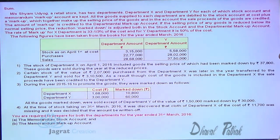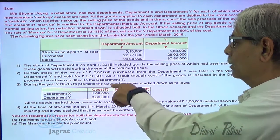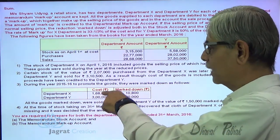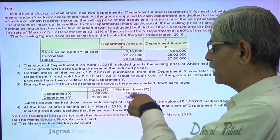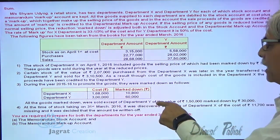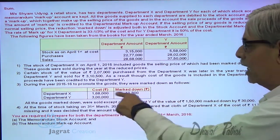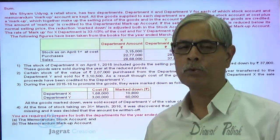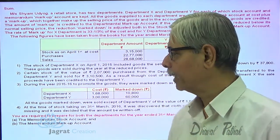During the year 2015–16, to promote goods, there were markdowns as follows: Department X — cost 1,68,000, markdown 10,800; Department Y — cost 3,10,000, markdown 60,000. All the marked-down goods were sold except in Department Y, where goods of cost 1,50,000 with markdown 30,000 remained unsold. So half of the markdown goods in Department Y are unsold at the end of the accounting period and need to be considered when valuing closing stock.